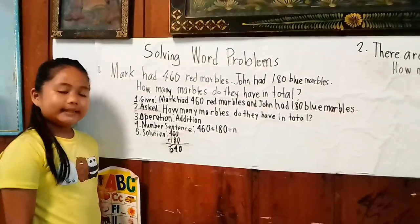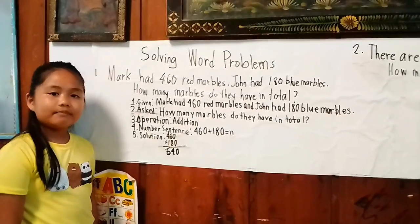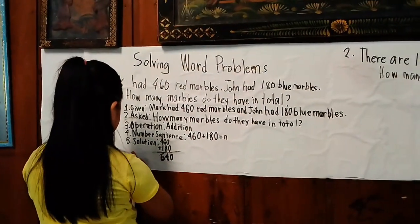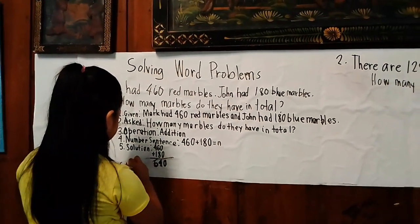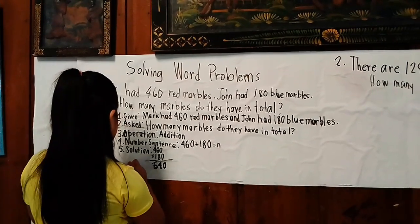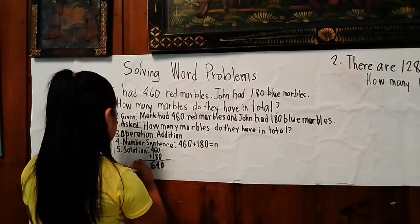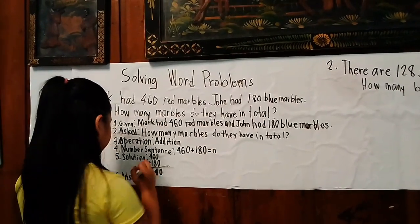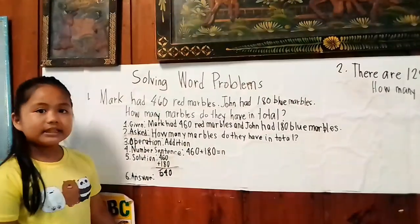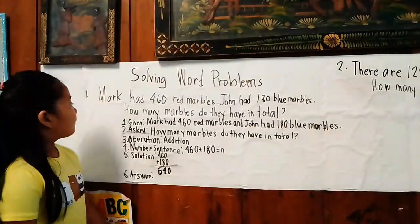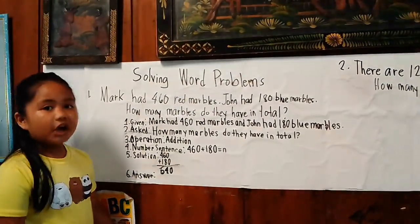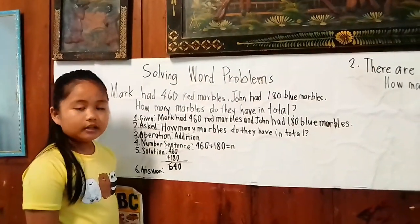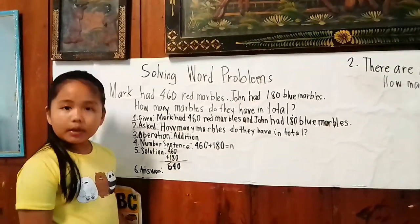Do you know the last step? The last step is 'Answer.' The answer is: Mark and John had 640 marbles in all.